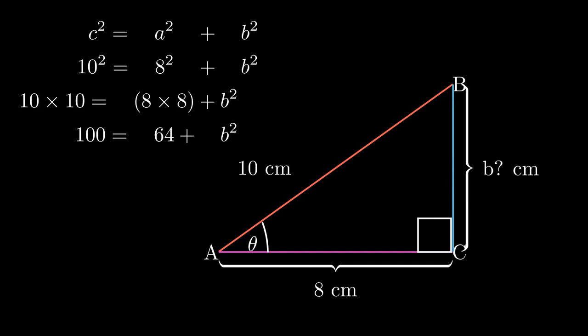Our b squared will be equal to 100 minus 64, and b squared will be 36. We'll find the square root of b and the square root of 36, giving us b equals 6 because the square root of 36 is 6. So b will be 6 centimeters.